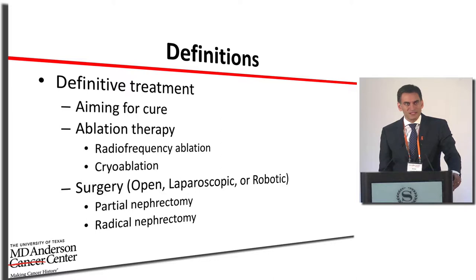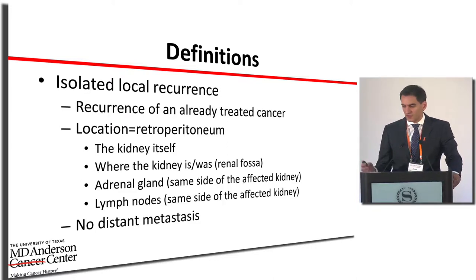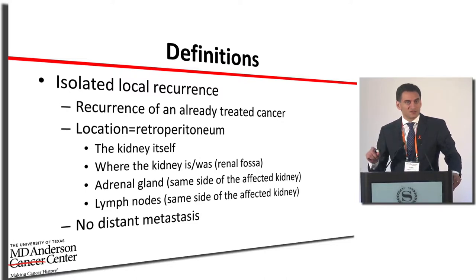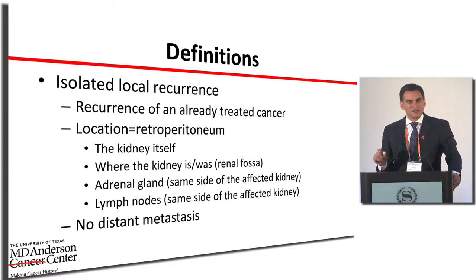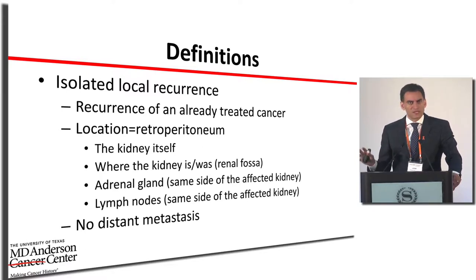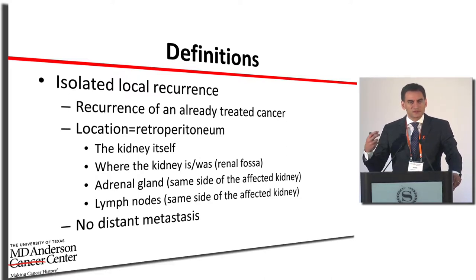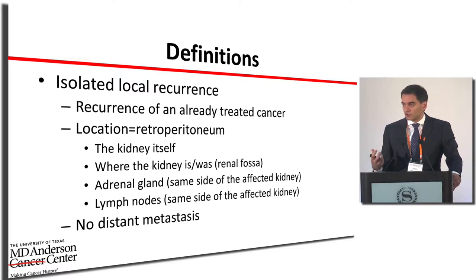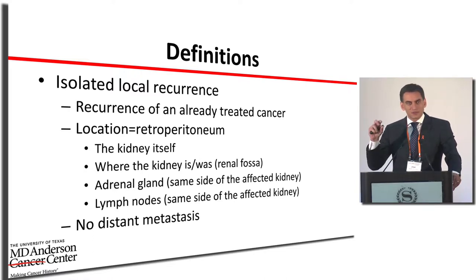To define an isolated local recurrence: it's a recurrence of a cancer that we already treated with the intention to cure, but it recurred again. The location is in the retroperitoneum — deep in the abdominal area, close to major blood vessels like the aorta and vena cava. It could be in the kidney itself, where the kidney used to be, in nearby lymph nodes, or in the adrenal gland.